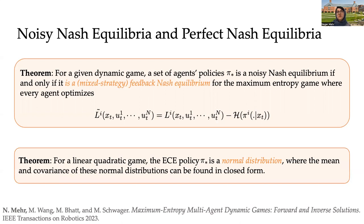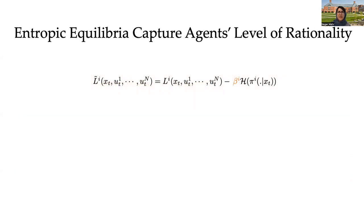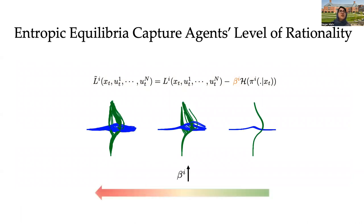This notion of entropy cost equilibria enables us to reason about agents' rationality in their interactions. If we allow a weight parameter on the entropy term, we can show that as the β_i for every agent increases, the agent's level of rationality decreases and the amount of noise in the trajectories of the agents increases.